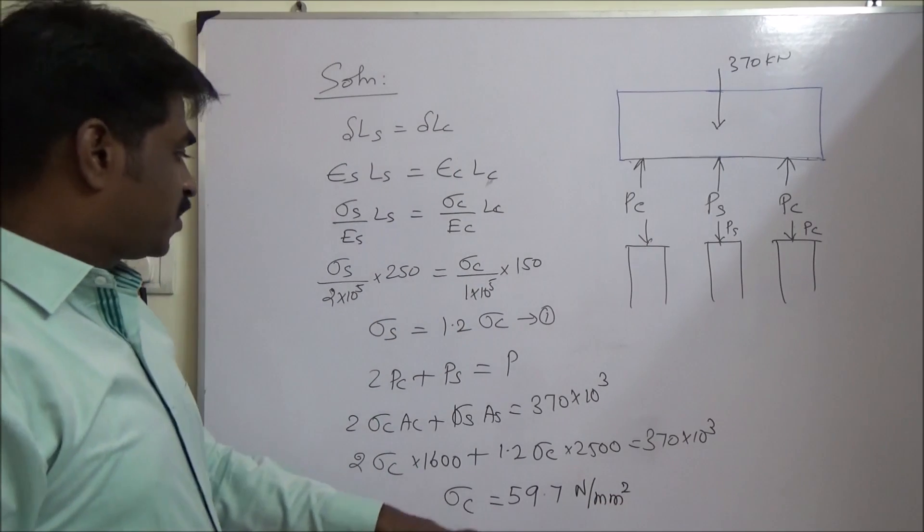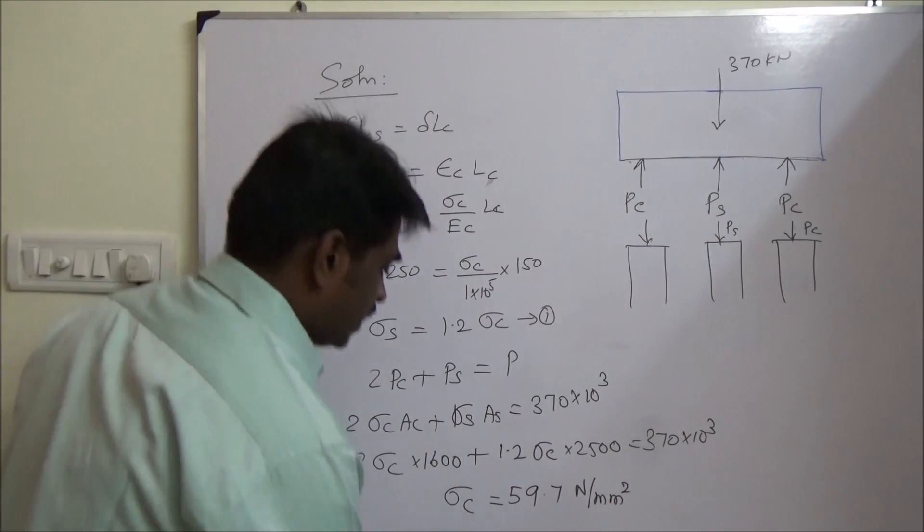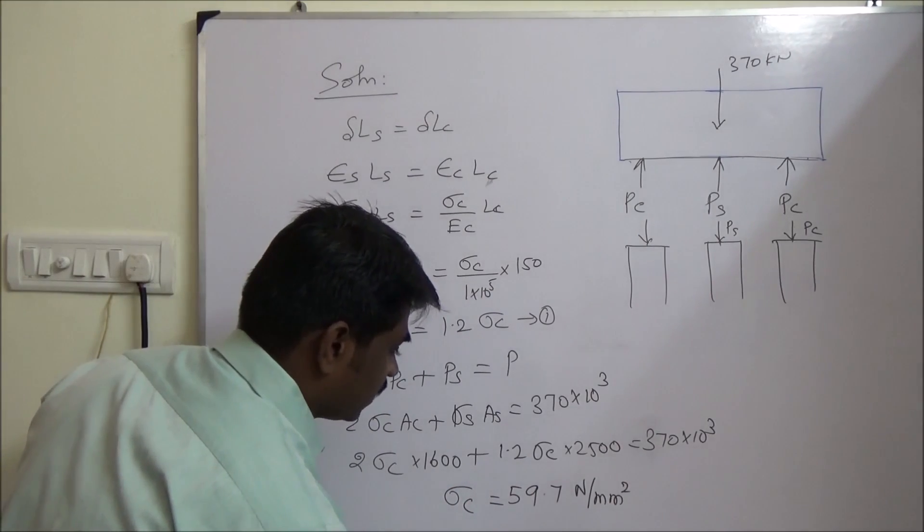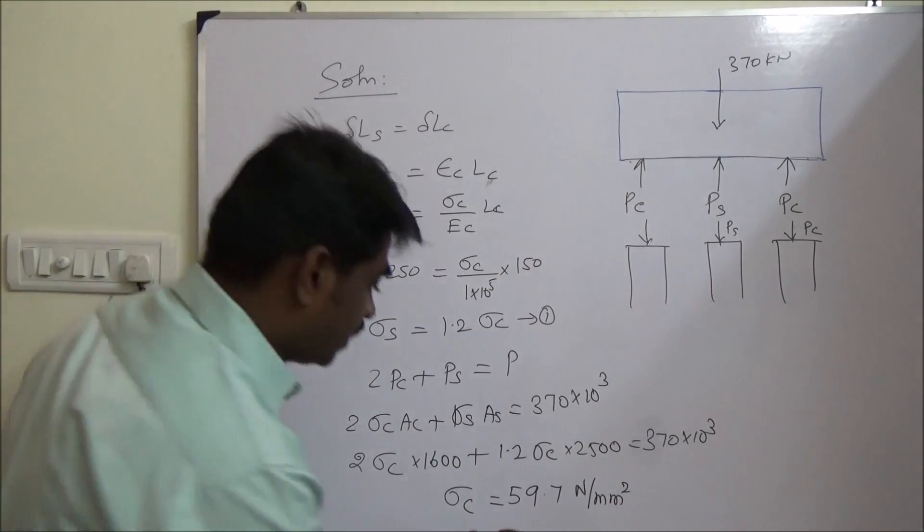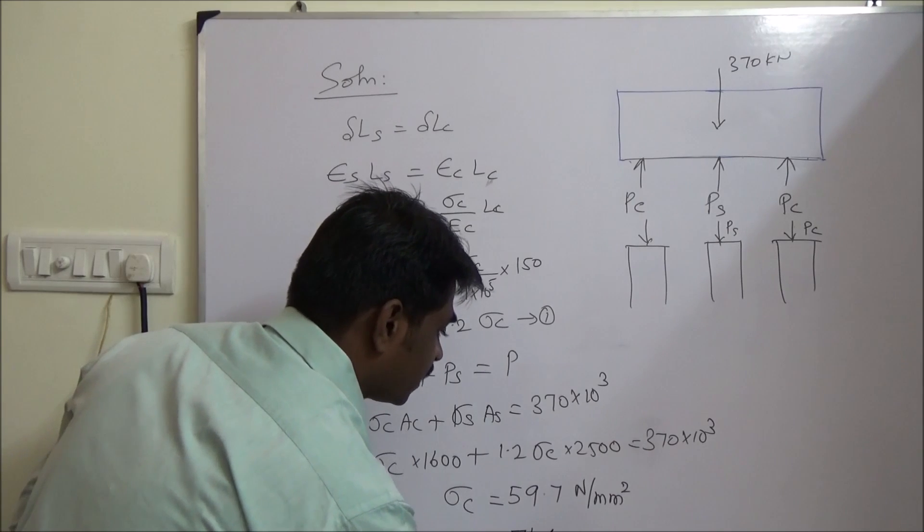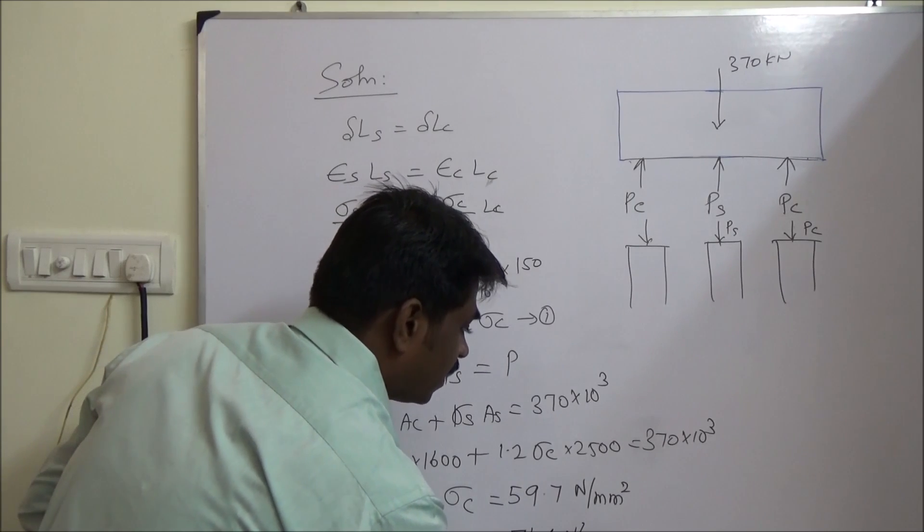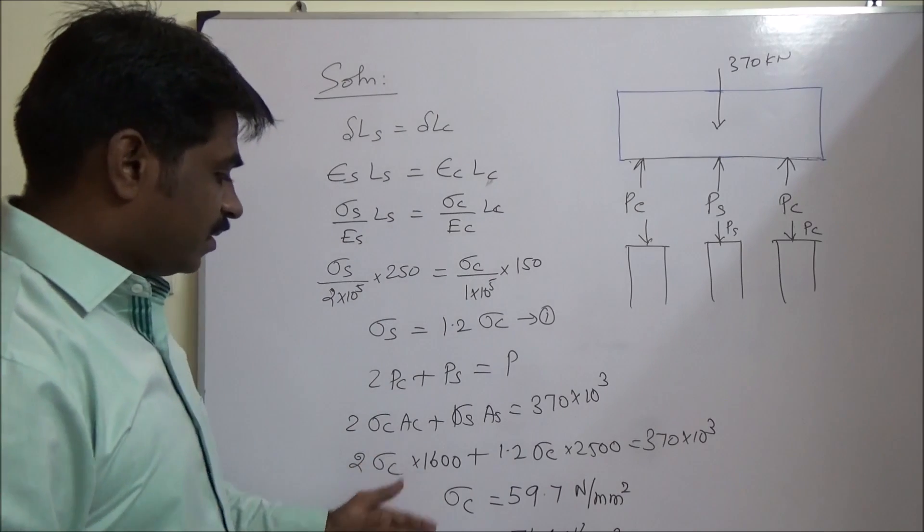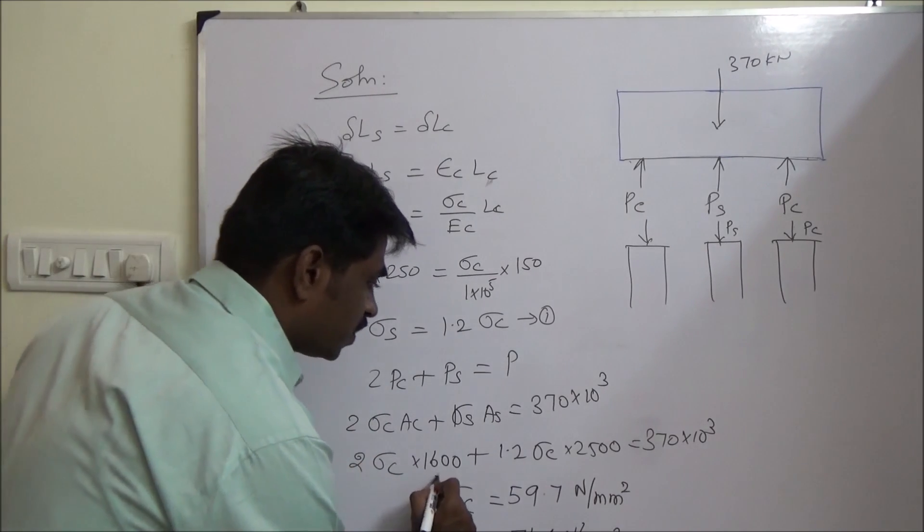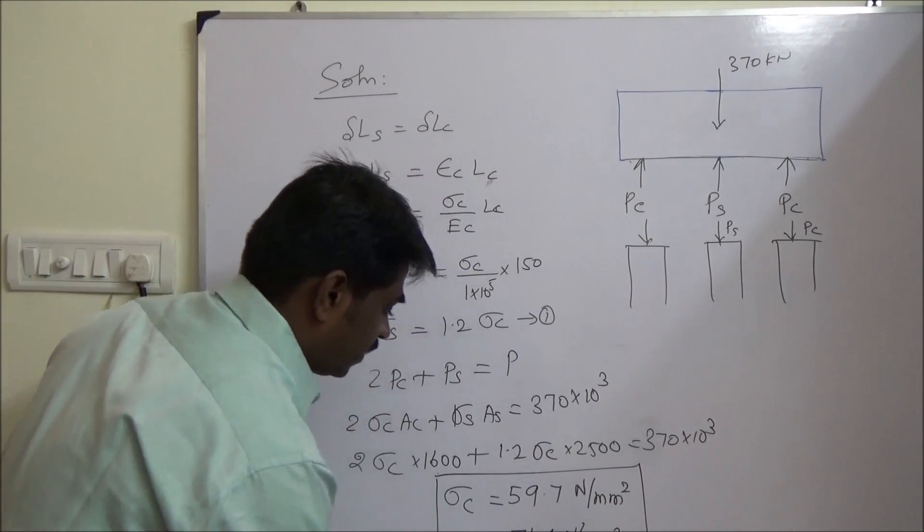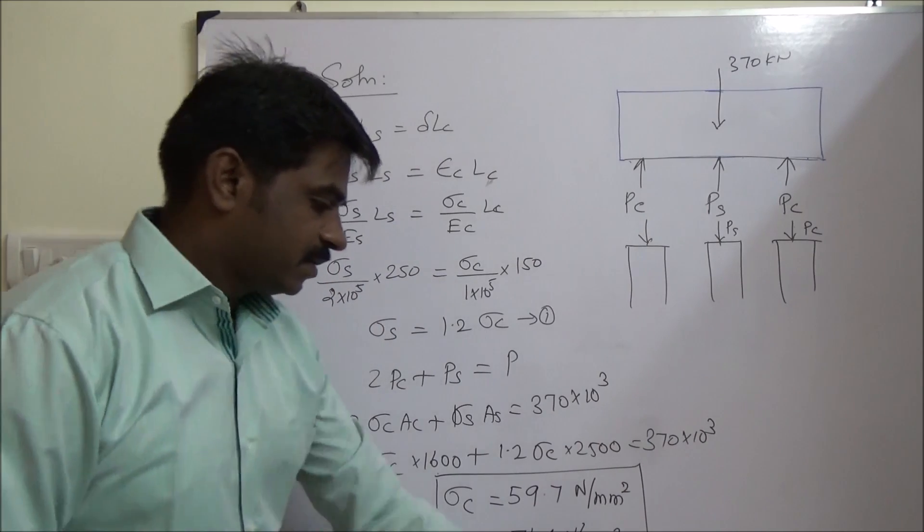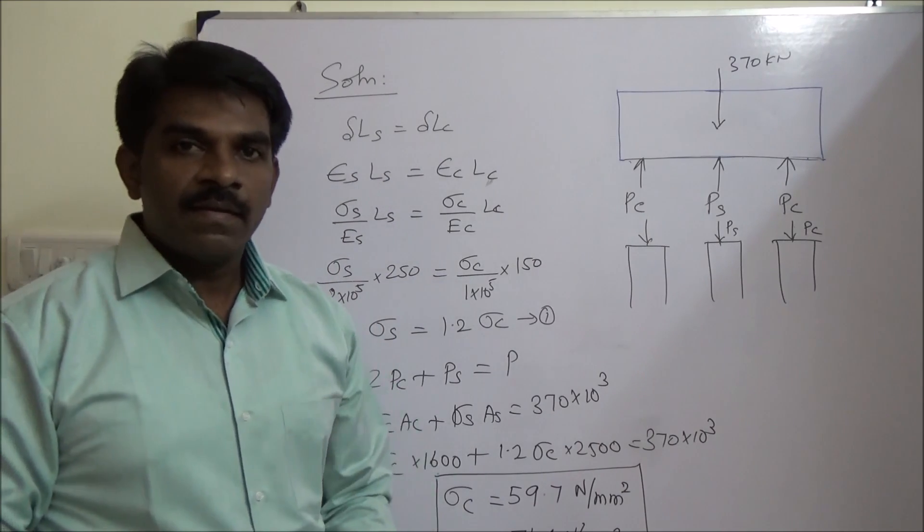So we can find sigma C from this. And we could get 59.7 Newton per mm square. When we substitute this here, we will get sigma S as 71.6 Newton per mm square. These are the two values we have to find. Is it clear? Fine.